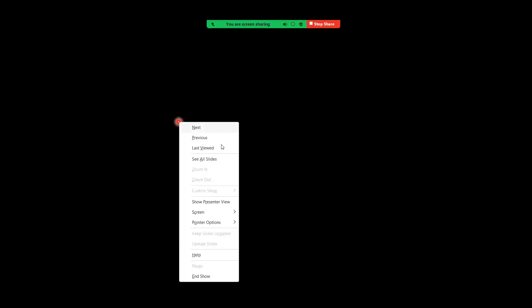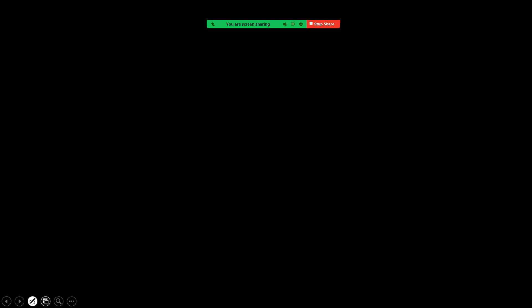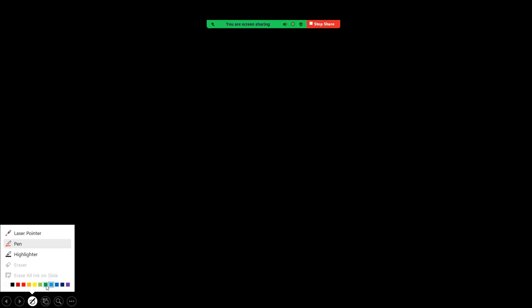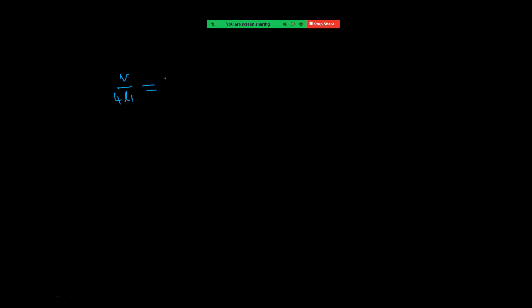See how we solve it. Closed pipe, first harmonic: frequency = V/(4L1). Open pipe, third harmonic: frequency = 3V/(2L2). Since both frequencies are equal and V gets cancelled, we equate them: 1/(4L1) = 3/(2L2), which gives L1/L2 = 1/6.